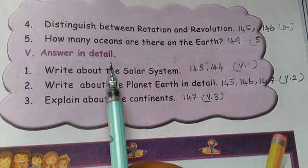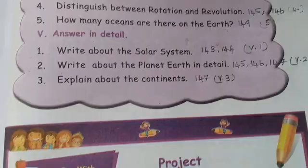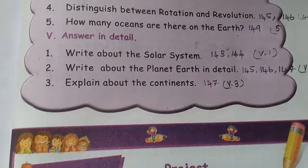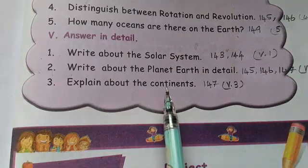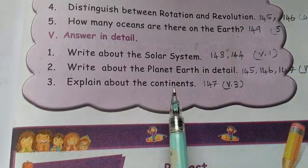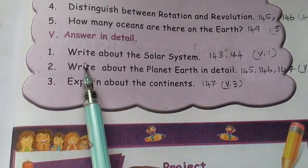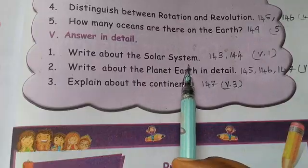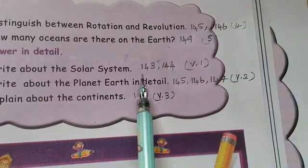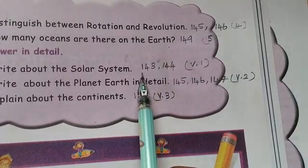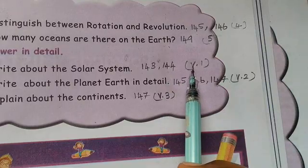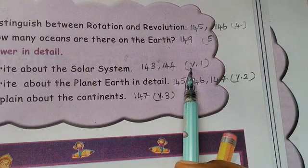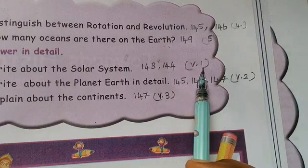Next, answer in detail - Roman numeral 5. Write about the solar system, page number 143-144. This is a detailed answer so make sure to write it fully.